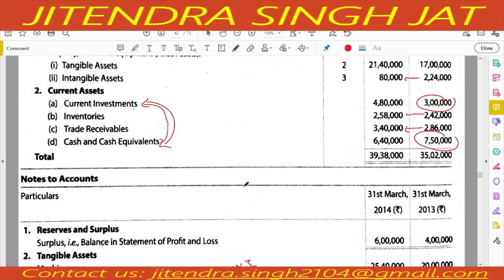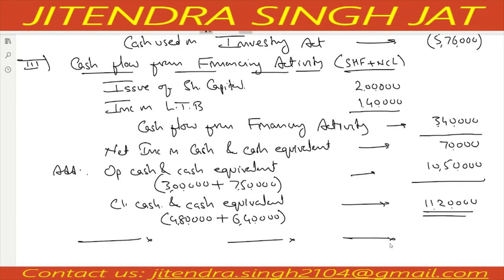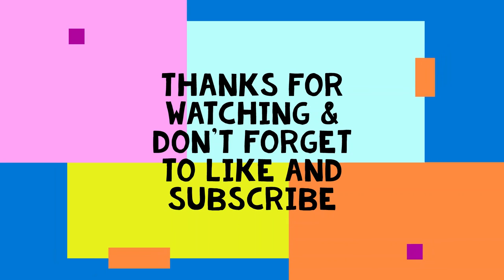Let us verify the closing cash and cash equivalent from the balance sheet. Closing current investment plus closing cash and cash equivalent should equal 11,20,000, confirming our answer.